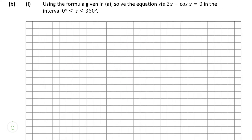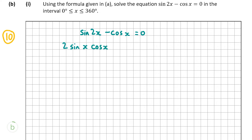Now we're going to have a look at B part 1, which is worth 10 marks. It says: using the formula given in A, solve the equation sine 2x minus cos x is equal to 0 in the interval x between 0 degrees and 360 degrees. We know that sine 2x is going to be equal to 2 sine x cos x, as that's what we derived in part A. Let's write that down instead.